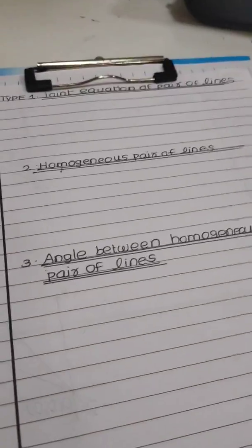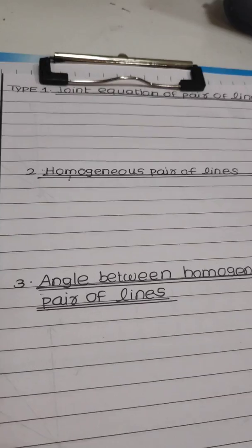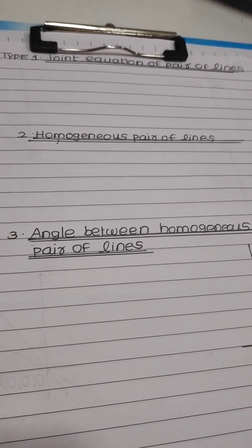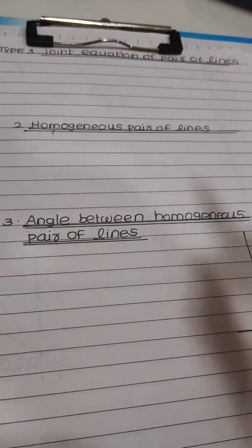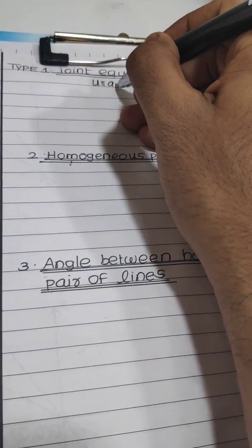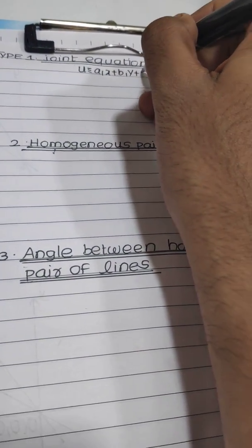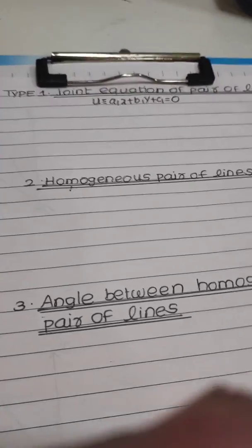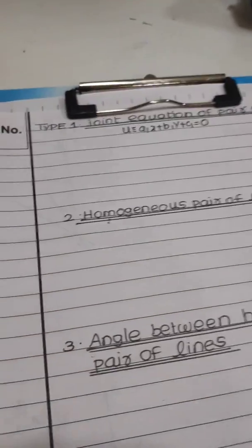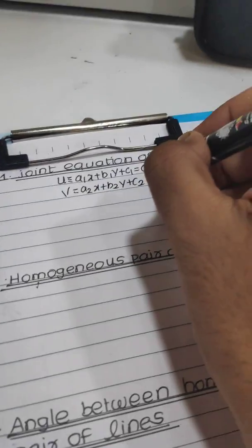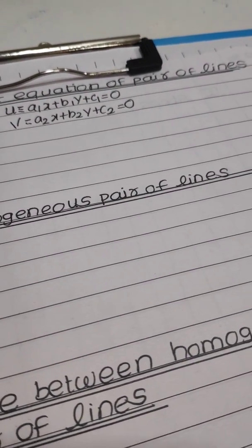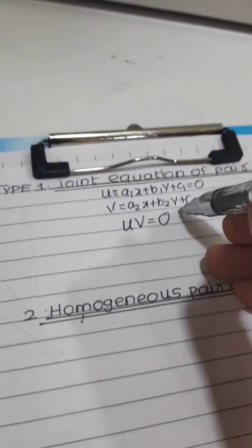Hello students. In the first lecture we have seen revision of coordinate geometry as well as pair of lines case study. We will have a quick revision of what we covered. The first topic was the joint equation of pair of lines: if u equals a1x plus b1y plus c1 equals 0 and v equals a2x plus b2y plus c2 equals 0, then the joint equation is u into v equals 0.